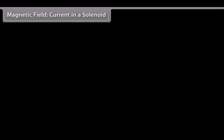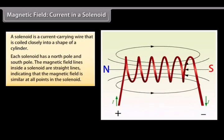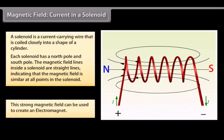A solenoid is a current carrying wire that is coiled closely into a shape of a cylinder with the turns as close together as possible. This is similar to a bar magnet. Each solenoid has a north pole and south pole. The magnetic field lines inside a solenoid are straight lines and indicate that the magnetic field is similar at all points in the solenoid. This strong magnetic field in the solenoid can be used to magnetize magnetic materials. This type of a magnet is called an electromagnet.